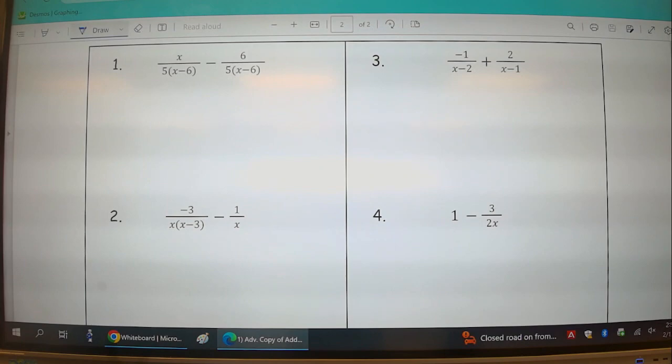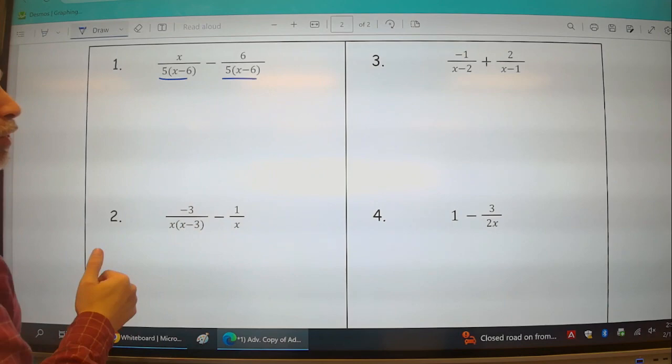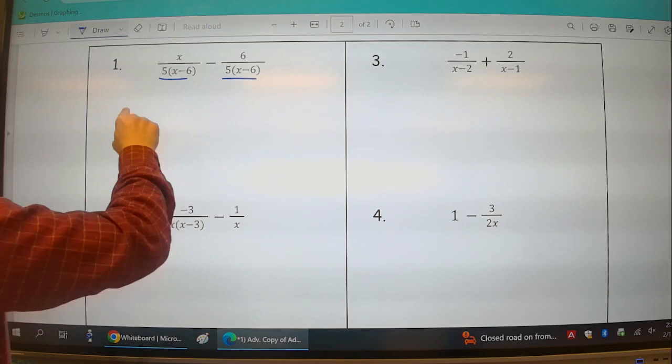Okay, here are your four practice problems from the notes. First problem: x over 5 times x minus 6 minus 6 over 5 times x minus 6. You'll notice they both have common denominators. When we have common denominators, we can just subtract or add their numerators. So in this case, if I did x minus 6, I would literally have x minus 6 over 5 times x minus 6.